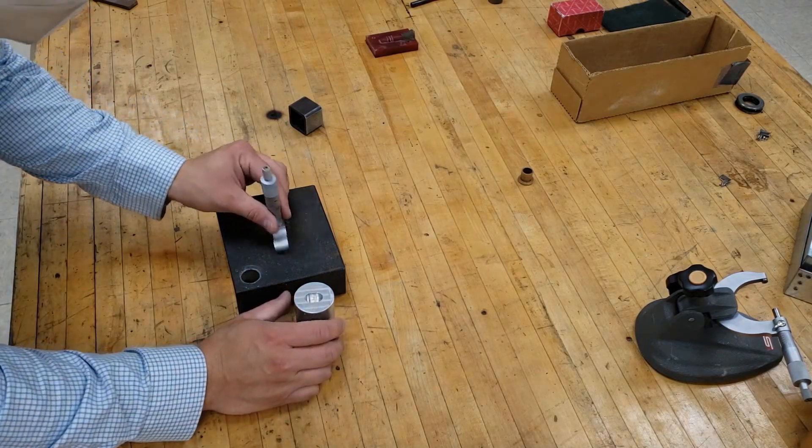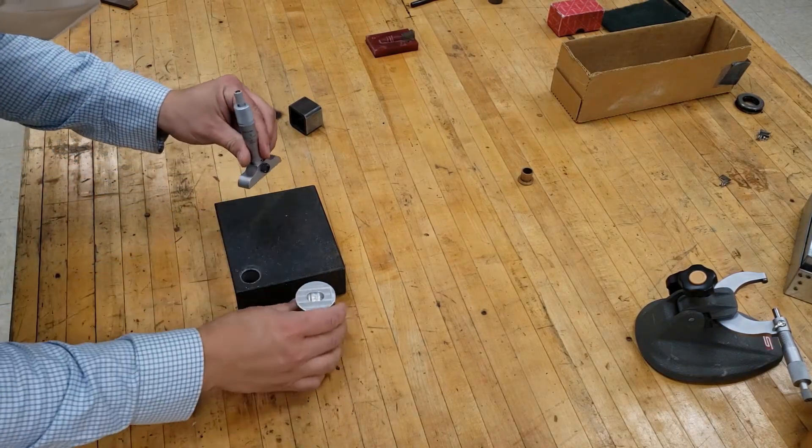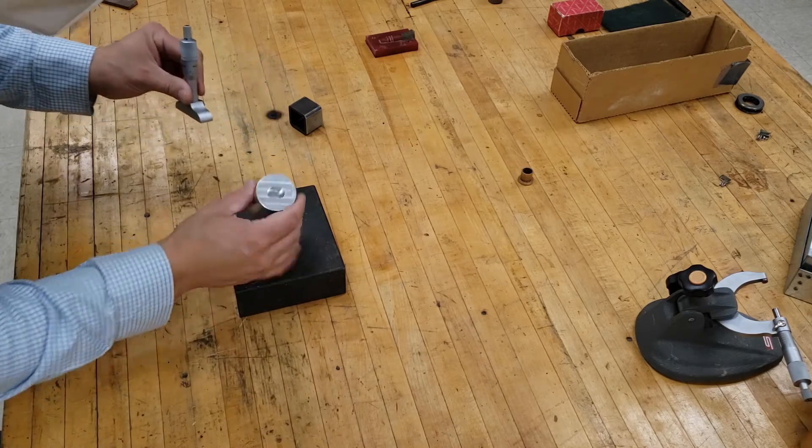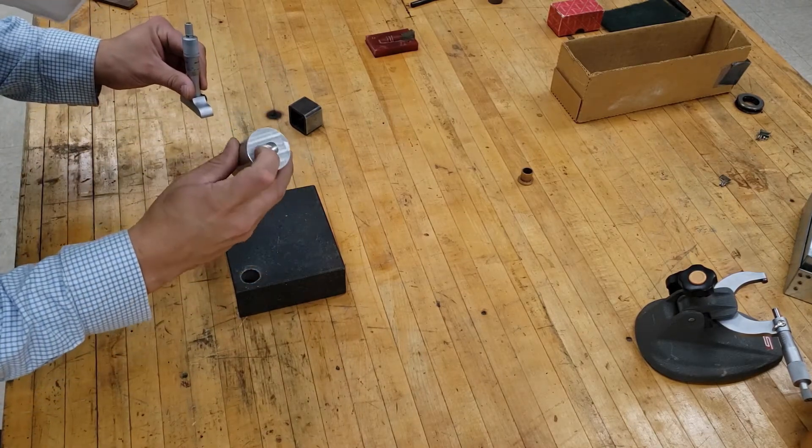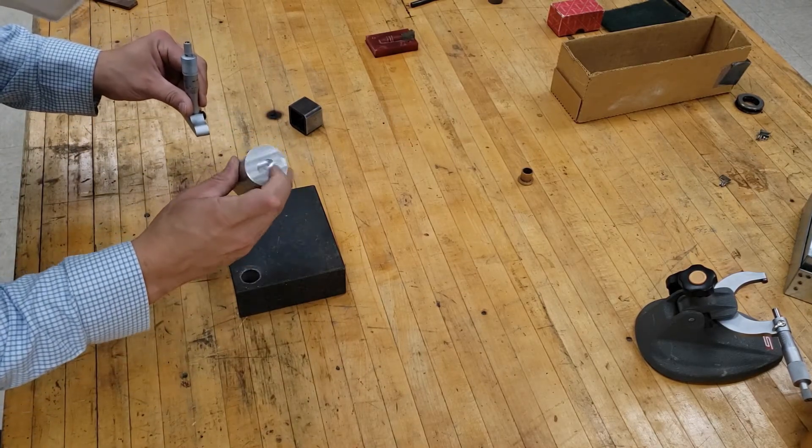After zeroing the depth micrometer, release the brake. Take the object that you want to measure the depth on. You are going to measure the depth in this channel here.